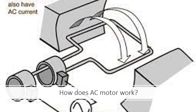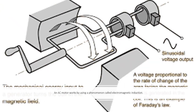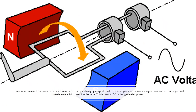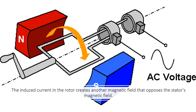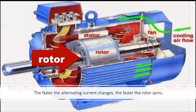How does an AC motor work? An AC motor works by using a phenomenon called electromagnetic induction. This is when an electric current is induced in a conductor by a changing magnetic field. For example, if you move a magnet near a coil of wire, you will create an electric current in the wire. This is how an AC motor generates power. The alternating current in the stator coils creates a rotating magnetic field that induces a current in the rotor coils or magnets. The induced current in the rotor creates another magnetic field that opposes the stator's magnetic field.